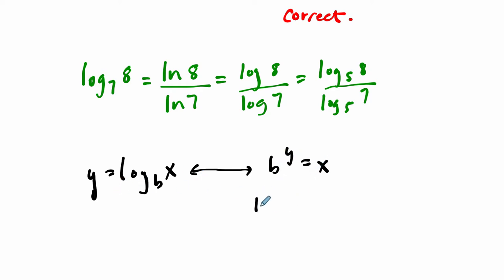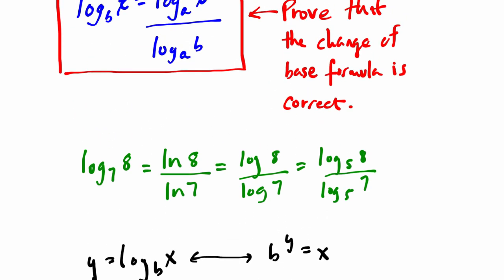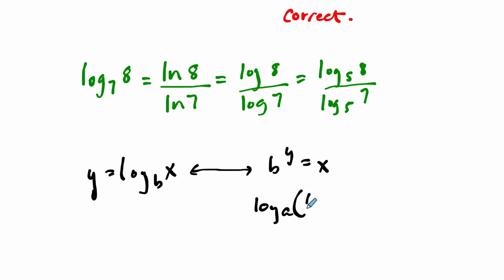So here, what happens if I take the log of both sides? We'll take the log base a because in our goal here, I see that we want to show that this will work for log base a, any base. Let's take the log base a of both sides: log base a of b to the y equals the log base a of x.